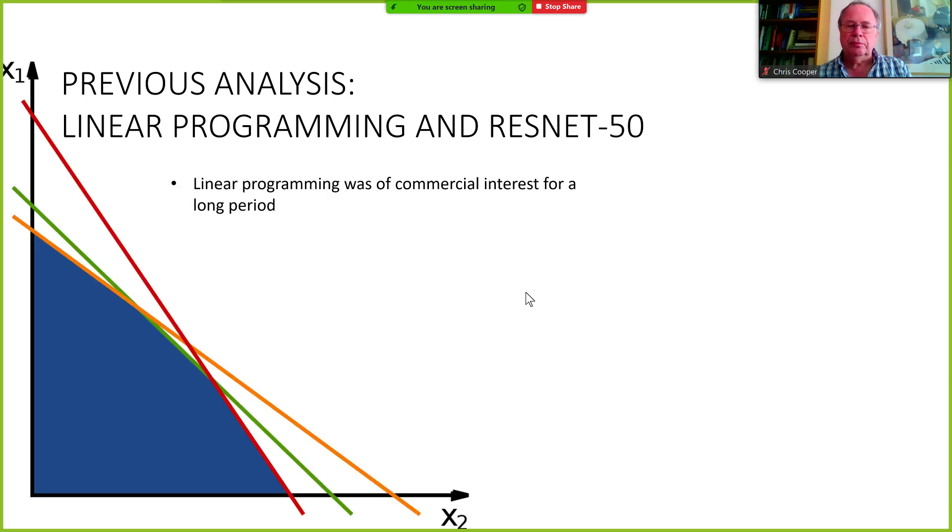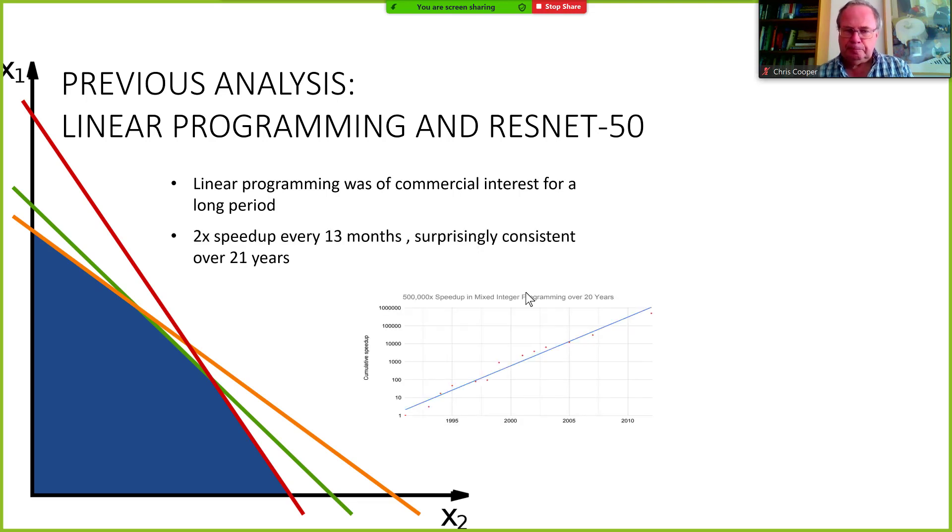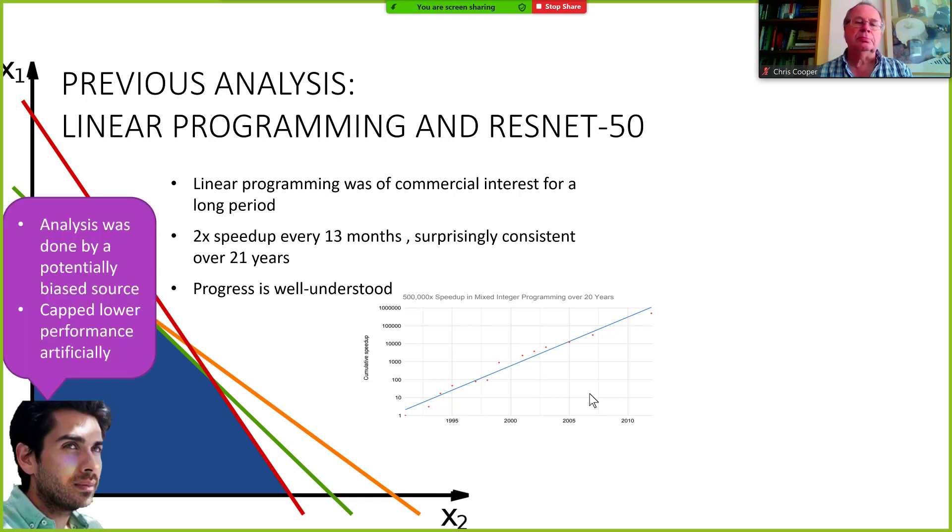Now there are a couple of other fields where people have tried to measure the rate of improvements on efficiency. The first is linear programming, which is stated to have been of commercial interest for a long period. And what we've seen is a doubling in speed every 13 months, and that's been consistent for 21 years. I mean, you probably can't see the graph here very much, but it's really surprisingly consistent. And this is also a very well understood problem, and the progress is also well understood.